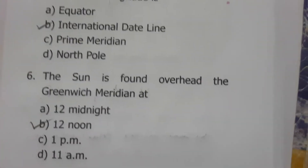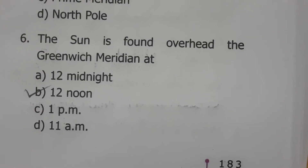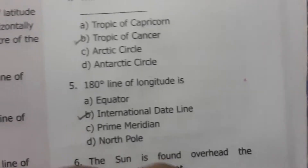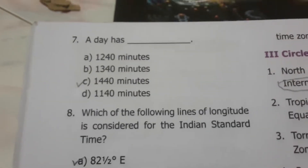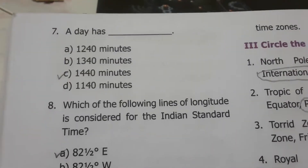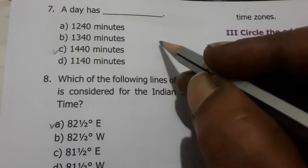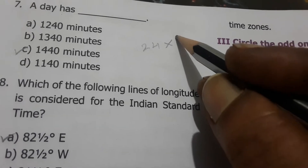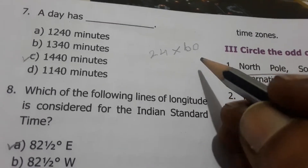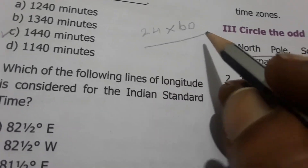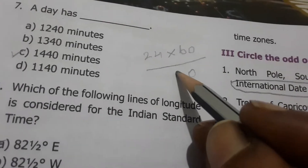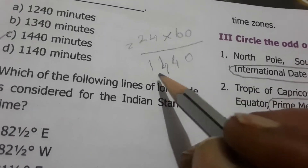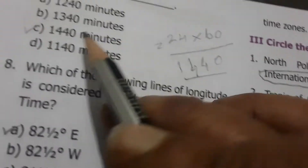The sun is found overhead the Greenwich Meridian at 12 noon. One day has 1440 minutes — one day has 24 hours, and 24 hours multiplied by 60 gives 1440 minutes. So option C — 1440 minutes — is the correct answer for this question.